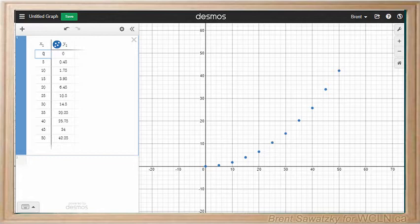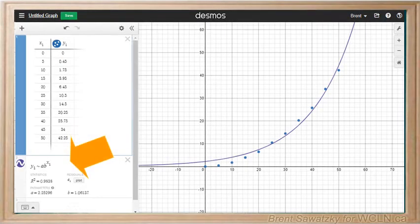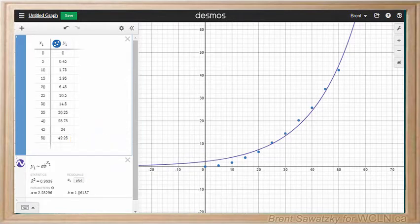Trying the exponential fit first. y1 tilde a b to the power of x1. Again we use y1 and x1 not just y's and x's. And that looks pretty good.